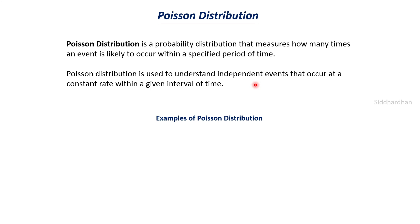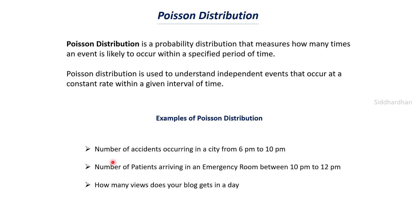Let's consider some interesting examples of Poisson distribution. The first one can be the number of accidents occurring in a city from 6 PM to 10 PM. This is a very active time period with a lot of vehicles on the road, and we are trying to find how many accidents occur in the city during this period. Let's say there are about 300 accidents happening. Once we have this information we can plan for the future — for example, what is the probability there will be 400 accidents, or only 200 accidents in a day?